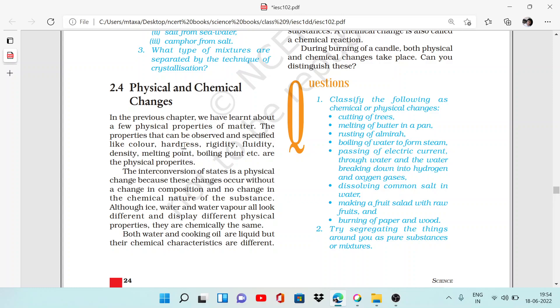These are physical properties. Now if we talk about interconversion of states, it is a physical change because these changes occur without a change in composition or no change in the chemical nature of the substances. Water is in three different states.